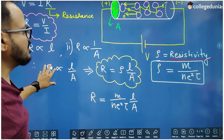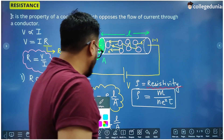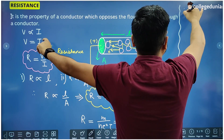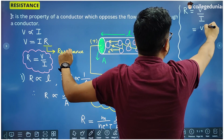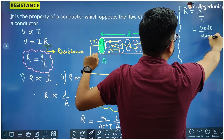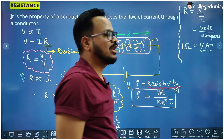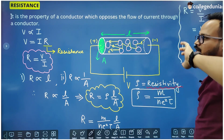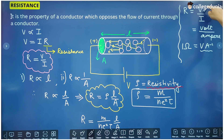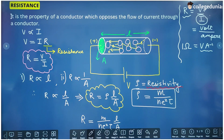The SI unit of resistance is ohm. From the formula R = V/I, the SI unit of voltage is volt and the SI unit of current is ampere, so the SI unit of resistance is volt per ampere, which is called ohm and represented by the symbol Ω. One ohm is defined as: if we apply a potential difference of one volt across a conductor and one ampere of current flows through it, the resistance of that conductor is one ohm.